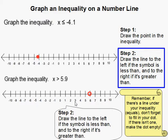Okay, so the last thing we need to do is draw the line. You draw the line to the left if the symbol is less than. You can think of it kind of like an arrow. So if it's pointing this way, then you draw the line that way. If it's going this way, you draw the line that way. And that's it, that completes our problem.